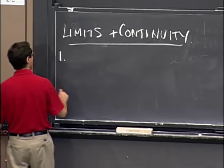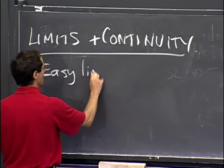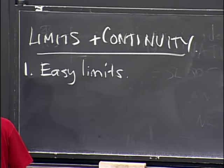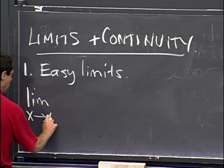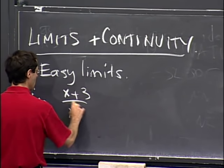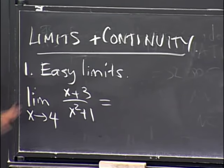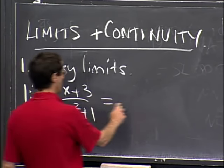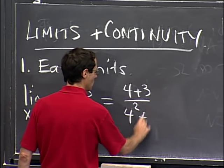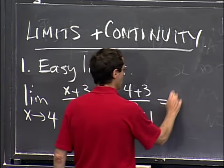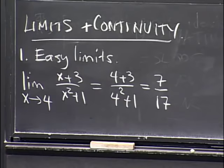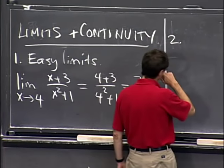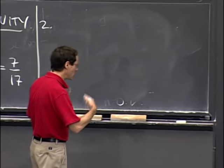An easy limit is something like the limit as x goes to 4 of (x + 3) / (x² + 1). With this kind of limit, all I have to do is plug in x = 4: I get (4 + 3) / (16 + 1) = 7/17. Those are the easy limits.